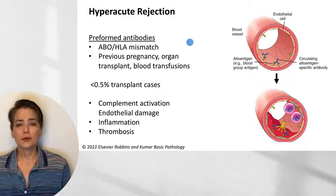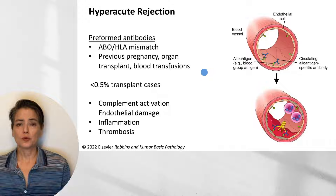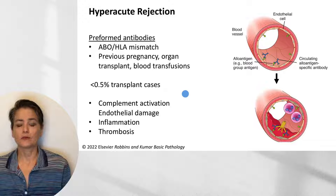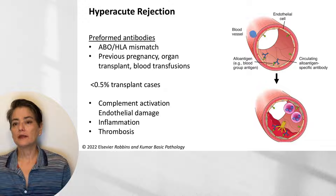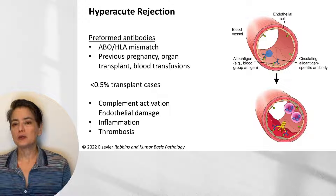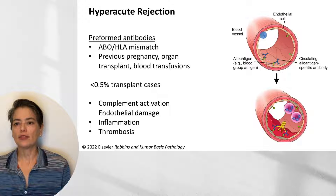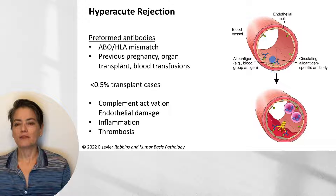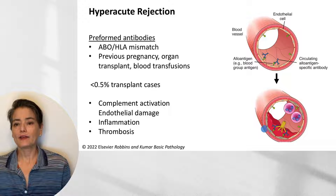Fortunately, this is very uncommon — we have mechanisms to minimize this sort of incompatibility, so it accounts for less than 0.5% of transplant cases. When the vasculature is connected and blood flows into the organ, the recipient's blood contains antibodies that recognize allo-antigens on the endothelium of the donor blood vessel. Attachment of these antibodies to this antigen triggers complement activation, which attacks the endothelium.